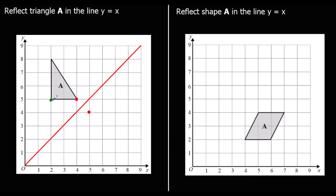This green point was one and a half away, so we go one and a half on the other side. And this purple point was three away, so one, two, three on the other side. We'll join them up, and this will be our new triangle. That's a reflection in the line y equals x.